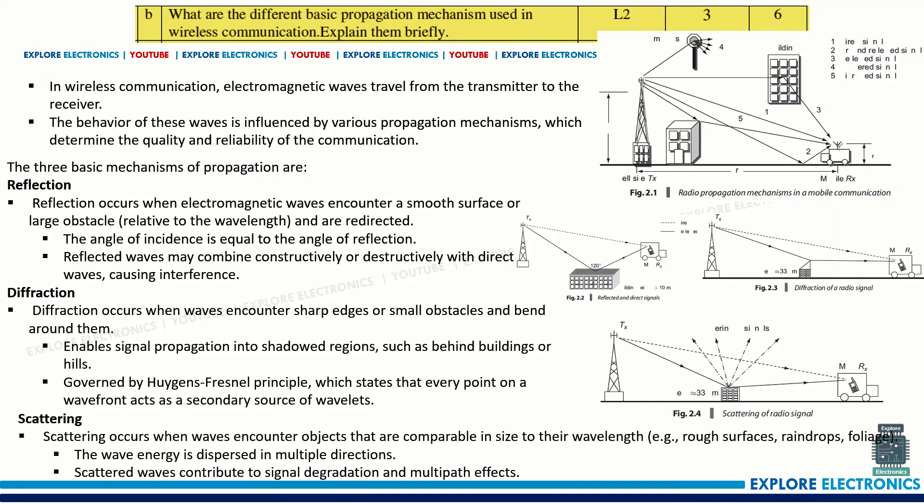What are the different basic propagation mechanisms used in wireless communication? There are three main propagation mechanisms: reflection, diffraction, and scattering. You can write the related diagram showing how reflection, diffraction, and scattering of the signal happen and the loss due to each.